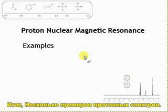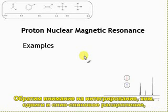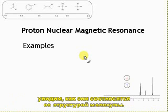Some examples of proton NMR spectra. We'll have a look at integration, chemical shift and coupling, and see how these are consistent with the molecular structure.